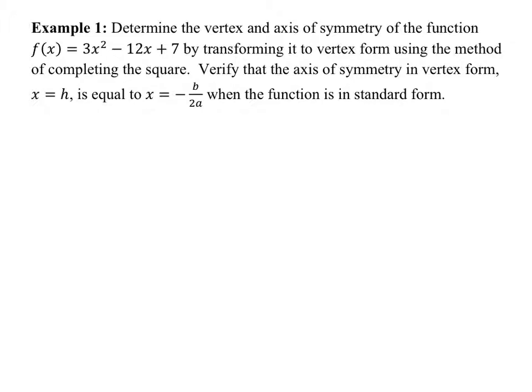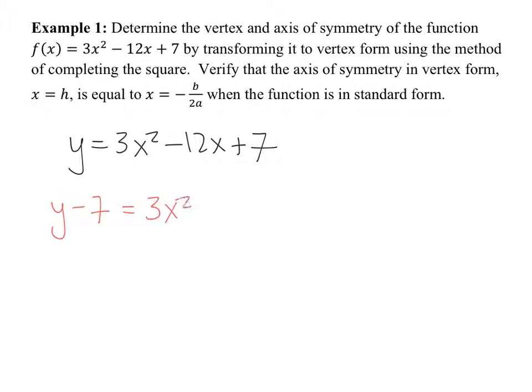Now we have the function. We cannot just set it equal to zero and do the same thing. But we can, instead of writing f(x), just write Y. We can go about the process the same way but with Y still there — we're just not going to get rid of it. So what does the process of completing the square tell me to do first? Move C. So I'm going to move it over, but Y is still there.